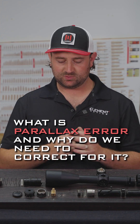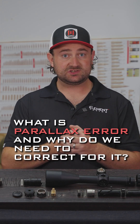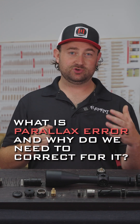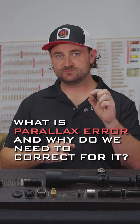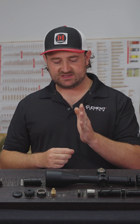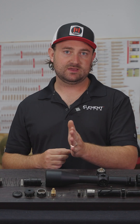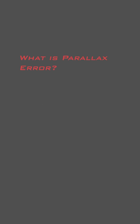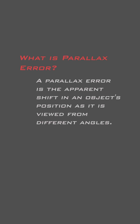Parallax error occurs when your reticle, which you use to aim and to measure, is not situated perfectly in the same focal plane as the image that's being projected onto it by your objective lens.